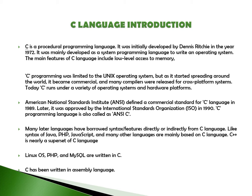This slide contains information about C language. C is a procedural programming language and was developed by Dennis Ritchie in the year 1972. It was mainly developed to write an operating system and its main feature is low-level access to memory. C programming was initially limited to a unique operating system, but as it started spreading around the world, it became commercial and many compilers were released. Today, C runs under a variety of operating systems and hardware platforms. The American National Standard Institute defined a commercial standard for the C language.